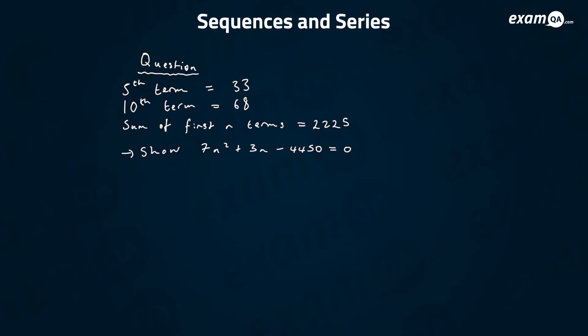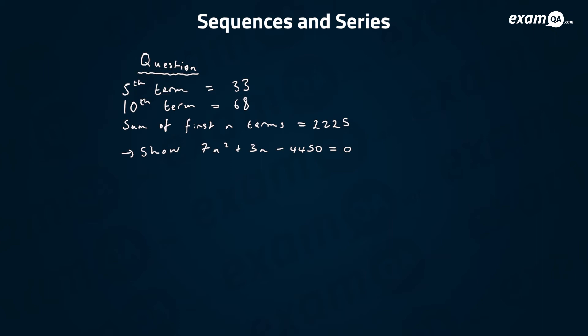The type of question would be: they give you two terms — they say the fifth term is this and the tenth term is that — and they give you the sum of the first n terms, then ask you to show some inequality. First thing I'd do is make some equations. They say the fifth term is 33, so u5 equals 33. The formula for the nth term is a plus (n minus 1)d.